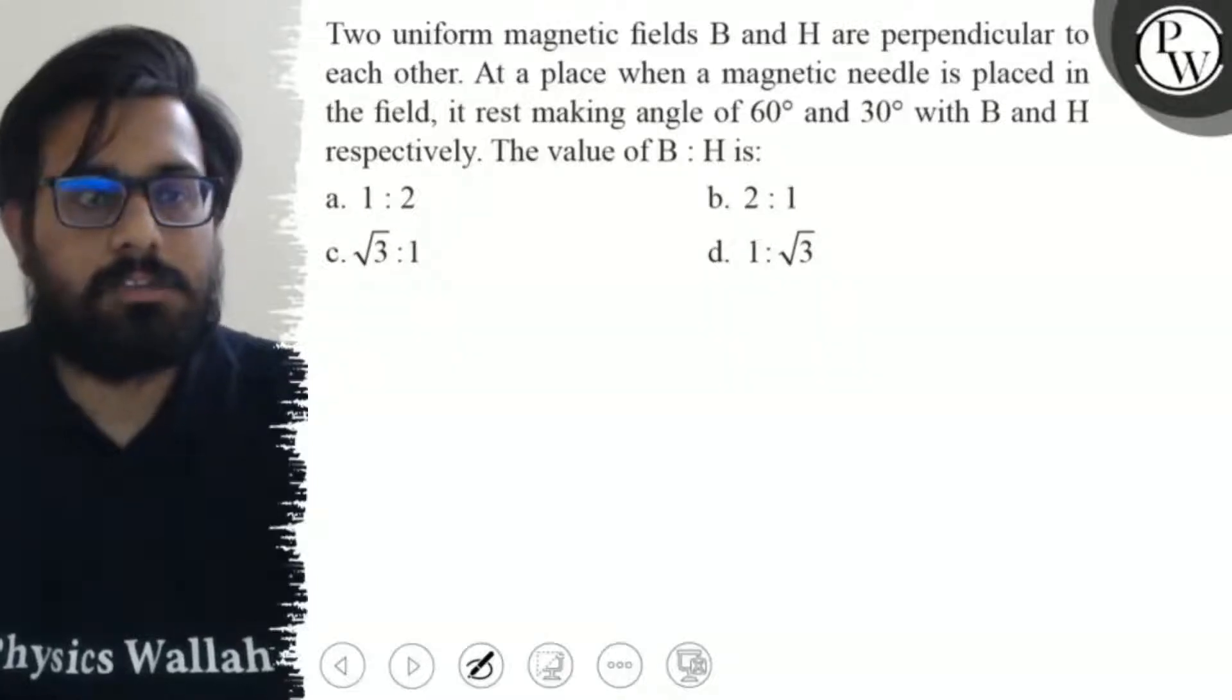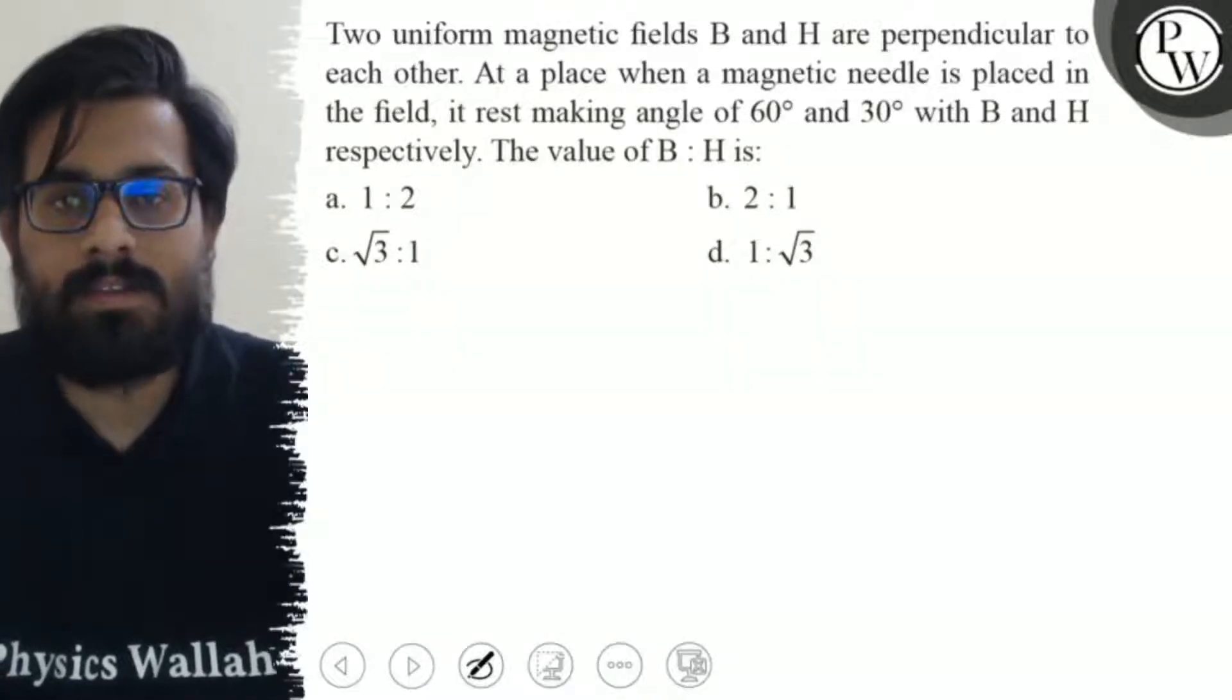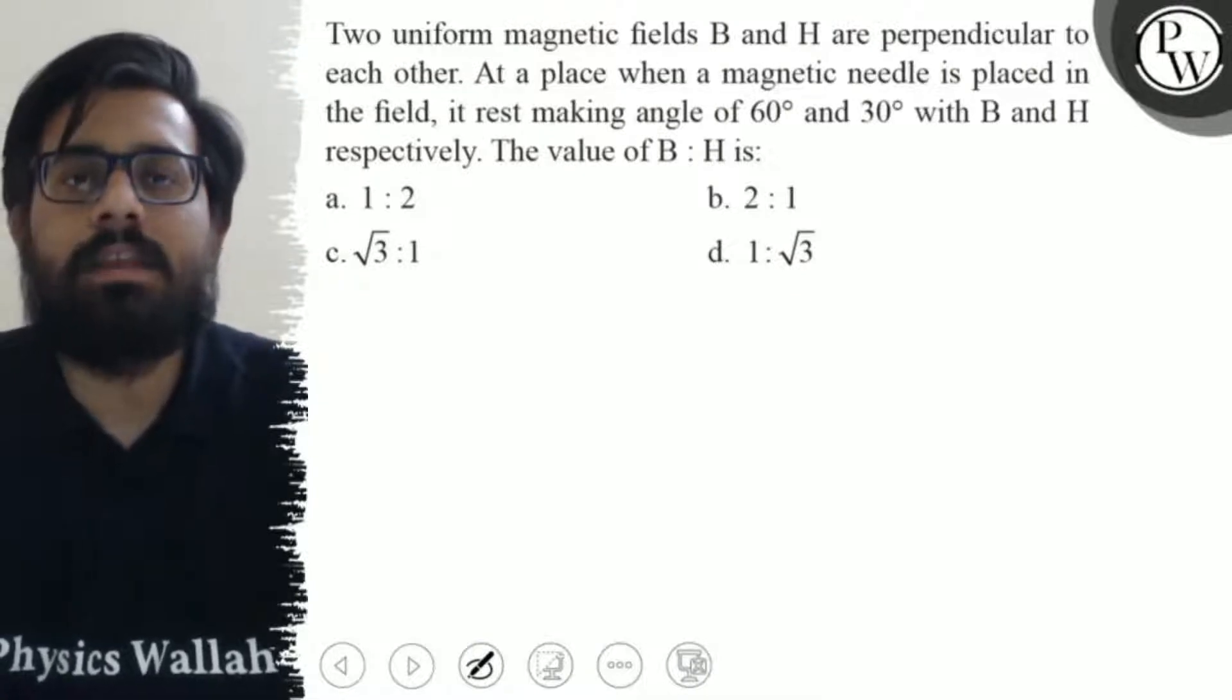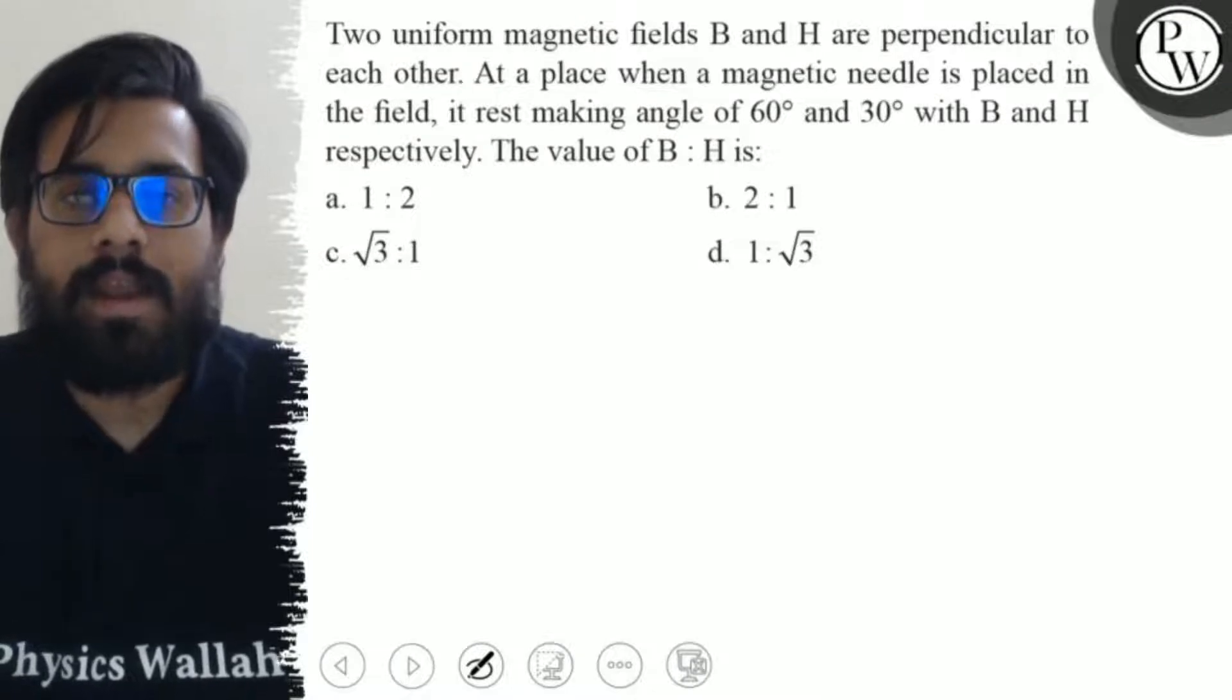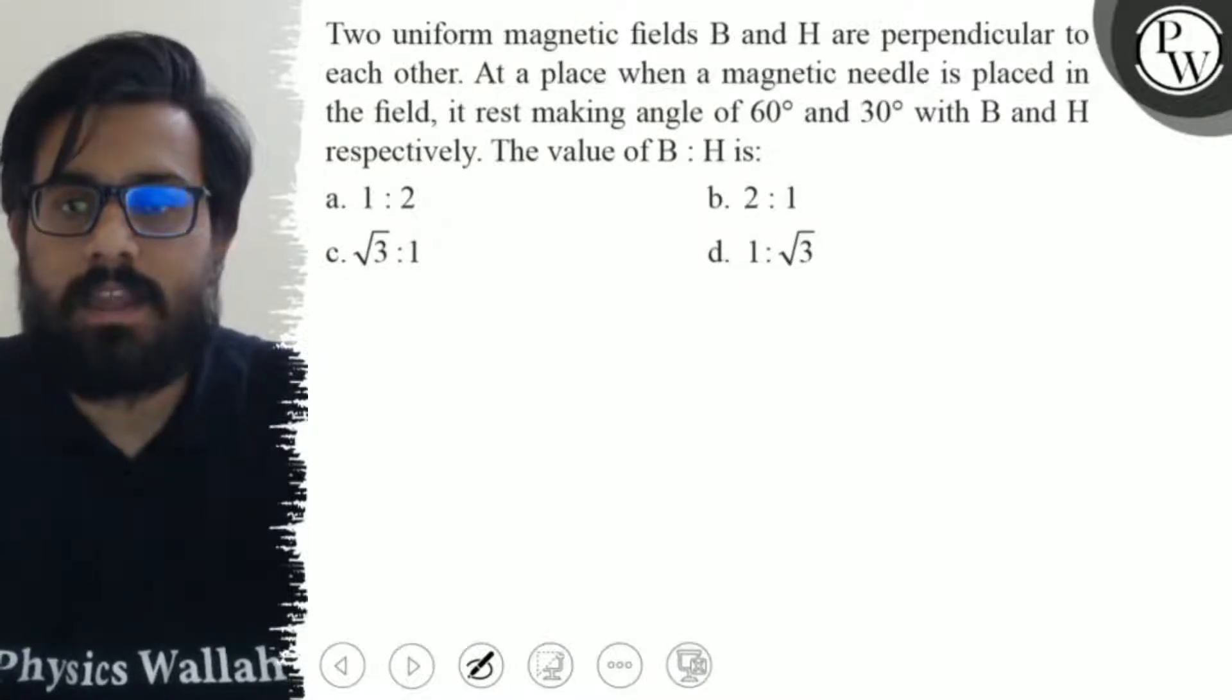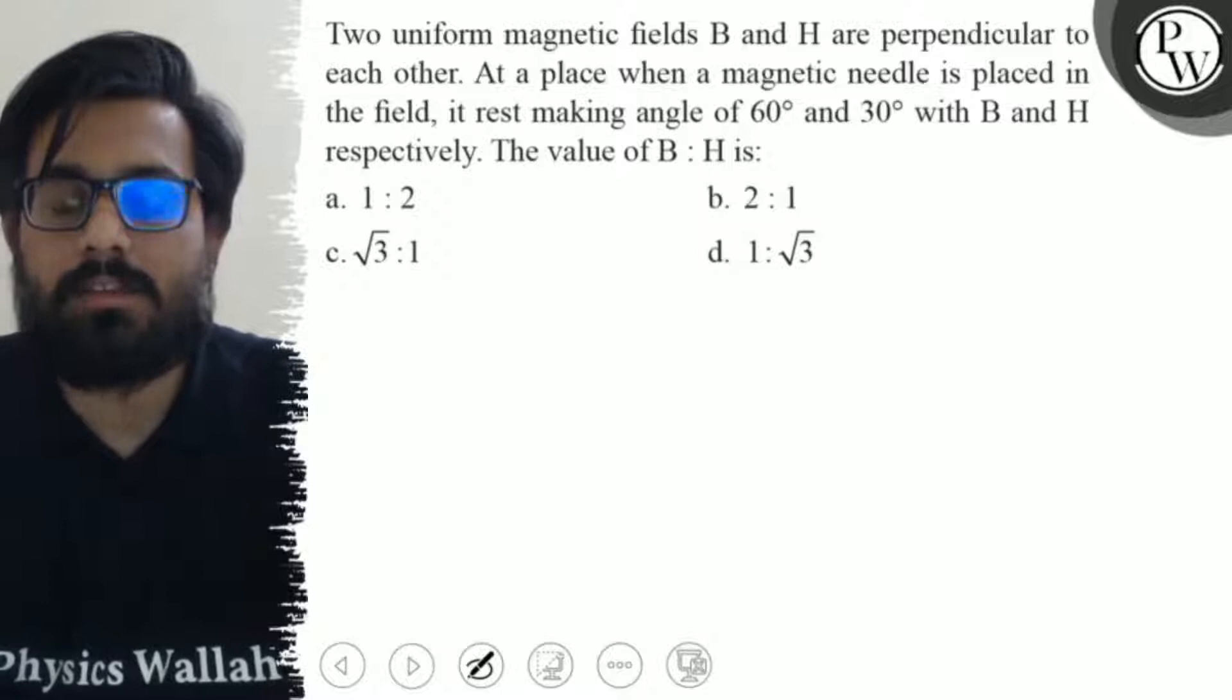Hello, bachos. Let's see the question: Two uniform magnetic fields B and H are perpendicular to each other. At a place when a magnetic needle is placed in the field, it rests making angle of 60 degree and 30 degree with B and H respectively.